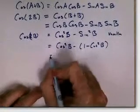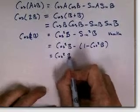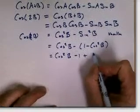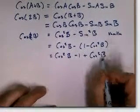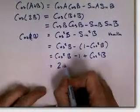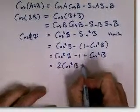And then I can distribute that minus sign. I get cosine squared B minus 1 plus cosine squared B. And the cosine squared B can get together for two of them, 2 cosine squared B minus 1.